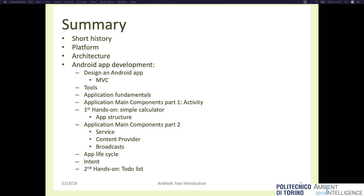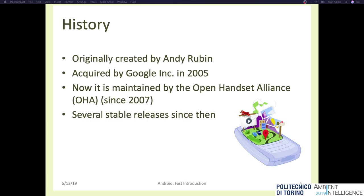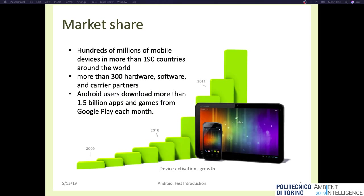Android was originally created by Andy Rubin. The early intention of the company was to develop an advanced operating system for digital cameras, but then the company decided that the market for cameras was not large enough. They started to develop Android as an operating system for mobile devices. Android was then acquired by Google in 2005 and today is one of the most common operating systems for mobile devices.